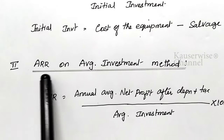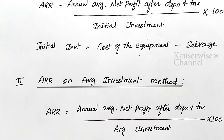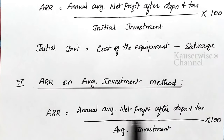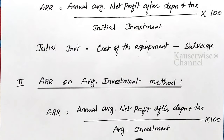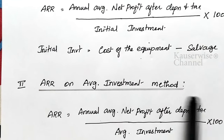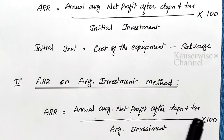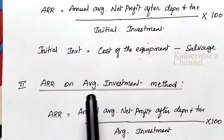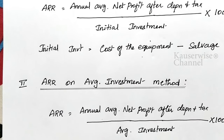The second formula is ARR on average investment method. Instead of initial investment, here you are going to take average investment — that is all. Same formula: annual average net profit after depreciation and tax, divided by average investment, into 100. All other things remain the same calculation to find out net profit after tax and depreciation.